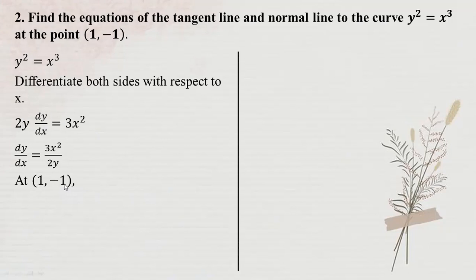Now we have minus 1 times y-prime. This is the y-prime. The y-prime is 1. So this y-prime is minus 3 by 2. So slope m equals y-prime.